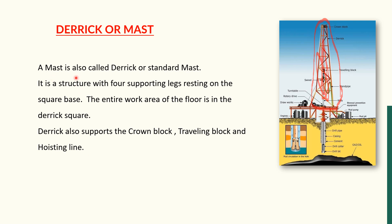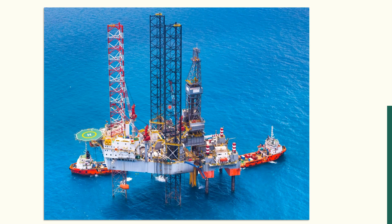The definition of derrick or mast: a mast is also called the derrick or standard mast. It is a structure with four supporting legs resting on a square base. The entire work area of the floor is within the derrick square — that is the rig floor. The derrick also supports the crown block at the top, the traveling block below the crown block, and the drill line.